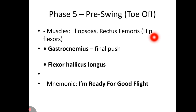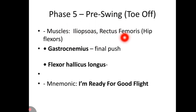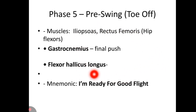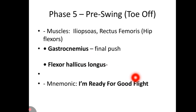Phase 5 is pre-swing — toe off. Muscles involved are iliopsoas and rectus femoris as hip flexors, gastrocnemius for the final push, and flexor hallucis longus. The mnemonic is 'I'm Ready For Good Flight': I for iliopsoas, R for rectus, F for femoris, G for gastrocnemius, and F of Flight for flexor hallucis longus.